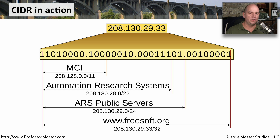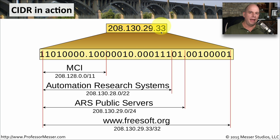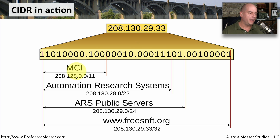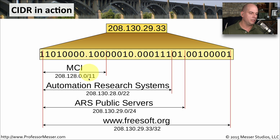Now that we can carve out networks that are exactly the size that we need, let's look at a practical example of how this was done. Let's take one particular host, 208.130.29.33, and look at historically how that particular device got that IP address. We'll start with the internet service provider. The Internet Assigned Numbers Authority provided MCI, at the time, with a particular block of addresses — 208.128.0.0/11 — which gave MCI the rest of that address space to use for anything it would like to do.